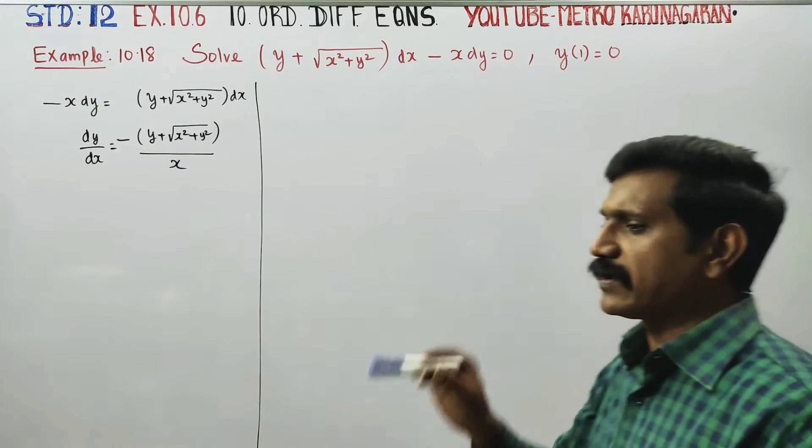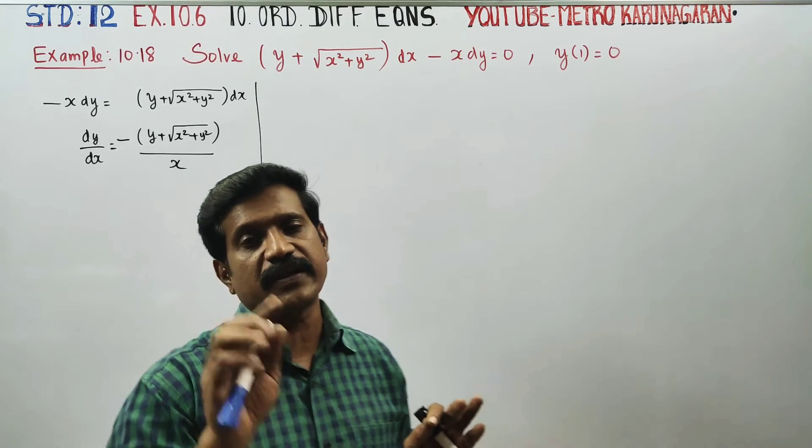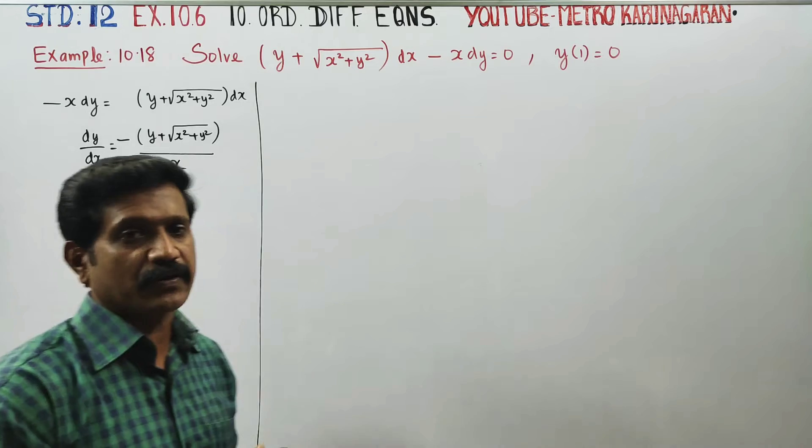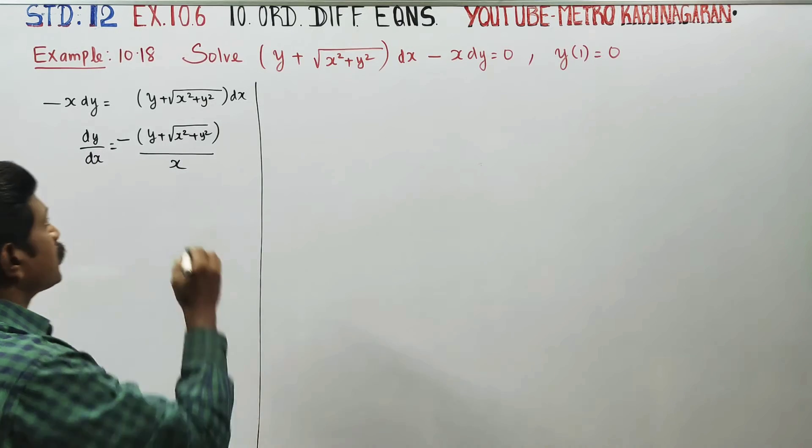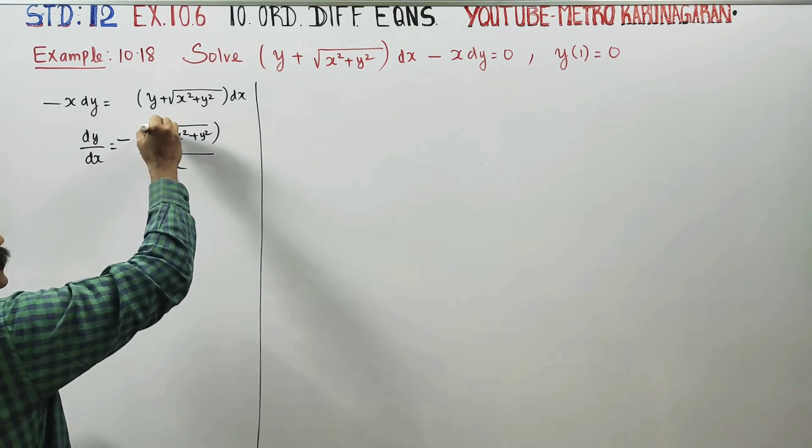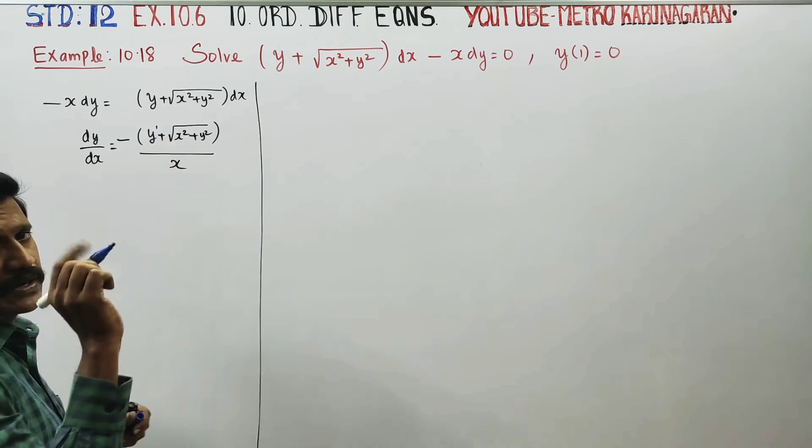The numerator is xy degree and denominator is xy degree — same here. This is degree 1.